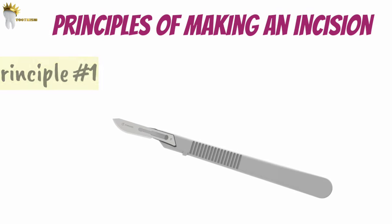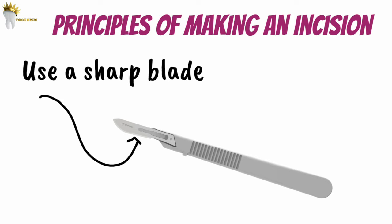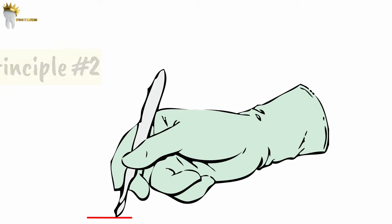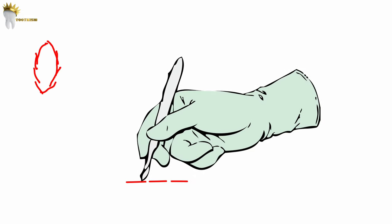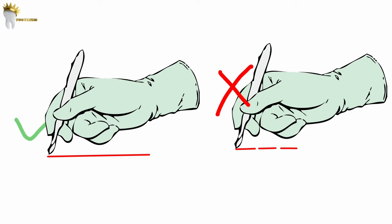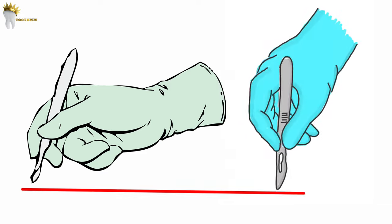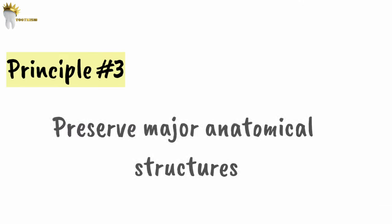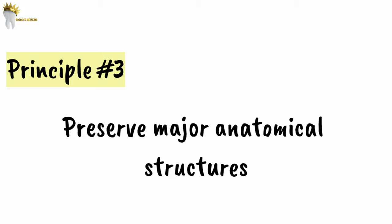The first principle of incision making is that we should always use a sharp blade. If the blade is sharp, we will not need to make repeated strokes. This brings us to the next principle: the incision should be made with a firm and continuous stroke. Short interrupted strokes increase the amount of damaged tissue and result in impaired wound healing. For the scalpel motion, notice how we are moving the hand at the wrist and not moving the entire forearm.